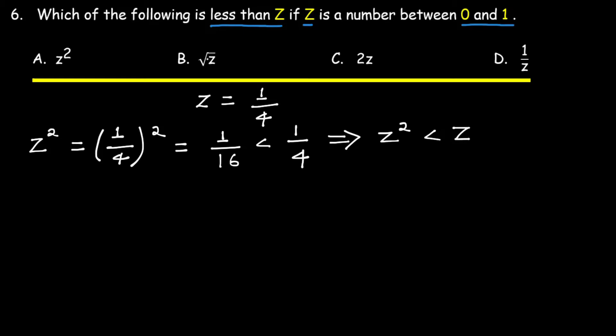Next, square root of z. Square root of z is square root of 1/4, which equals 1/2, which is greater than 1/4. So square root of z is greater than z.